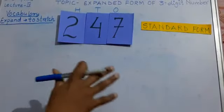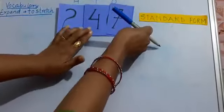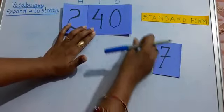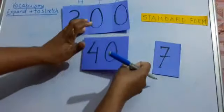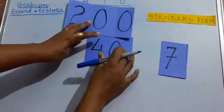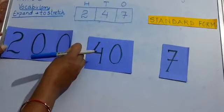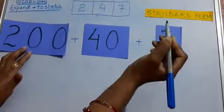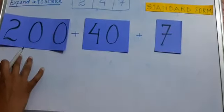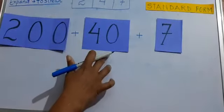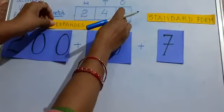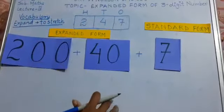Now we expand this number. 7 is at the 1's place, so we write 7. 4 is at the 10's place, so we write 40. And 2 is at the 100's place, so we write 200. So this is the expanded form of 247 — that is 200 plus 40 plus 7. This form is called the expanded form of the numeral.